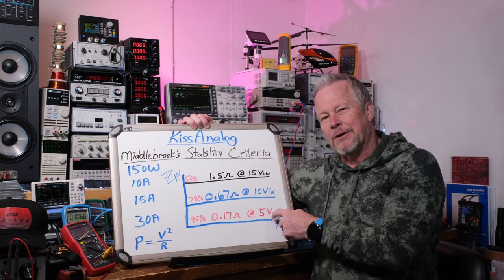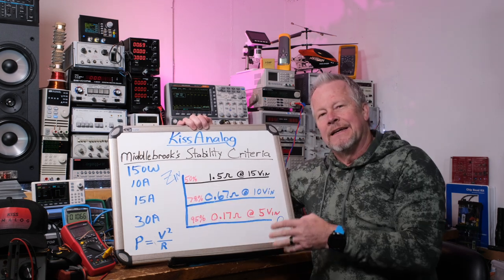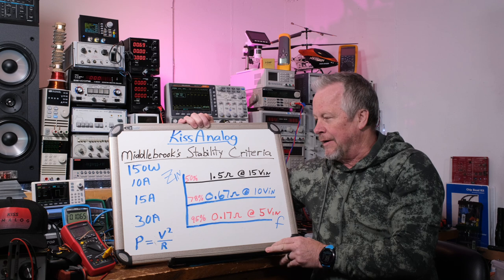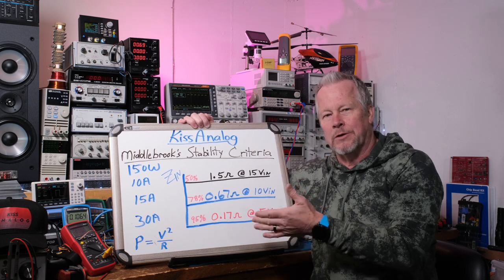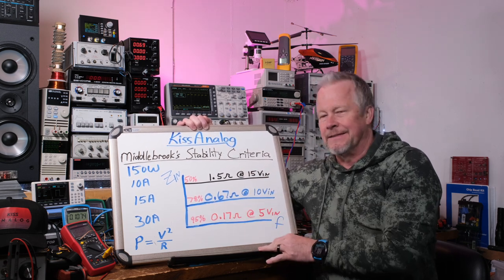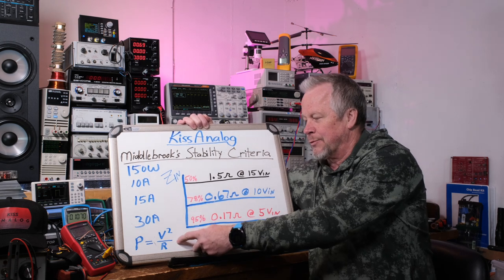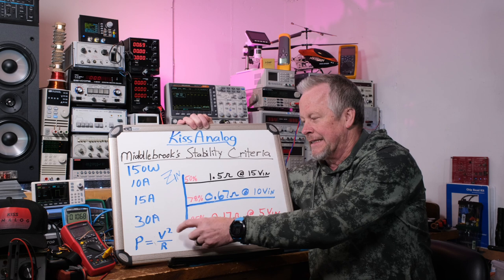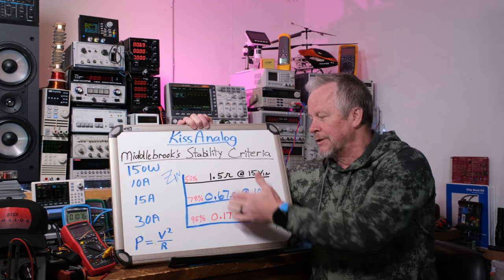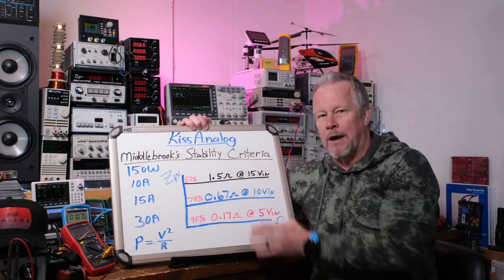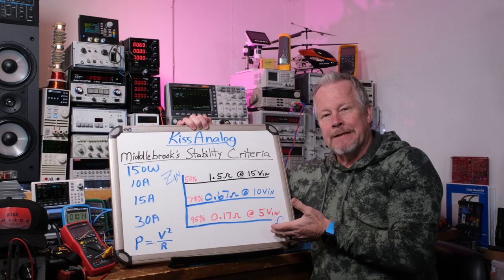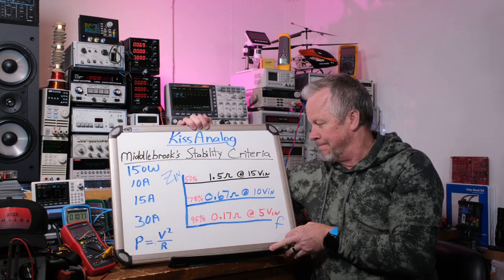The voltage dropped about two thirds and the current increased about three times. Since power is voltage times current, that makes sense. But the impedance dropped almost 10x, and the reason is that impedance in the power equation is V² divided by R. So as the voltage drops, the impedance at the input looks like it's dropping like a brick — that's our negative resistance, and that's what can potentially cause some serious issues.